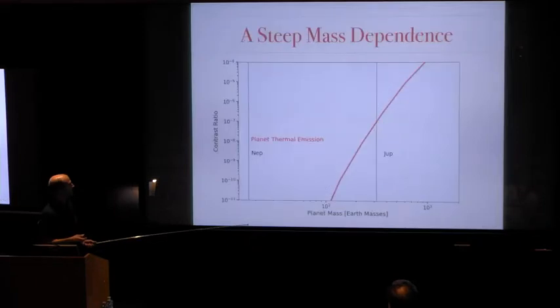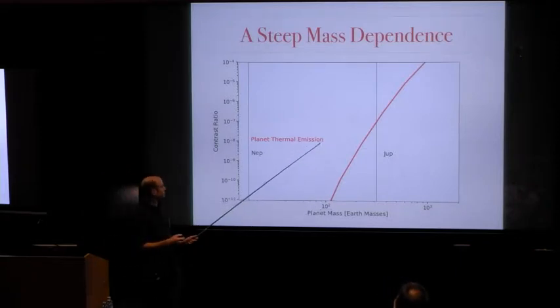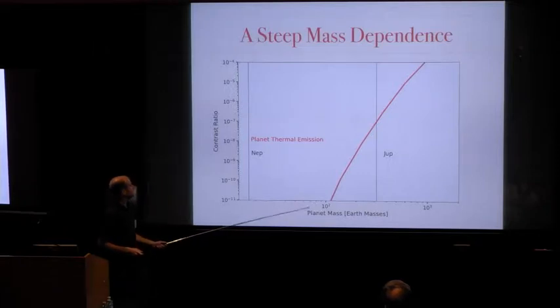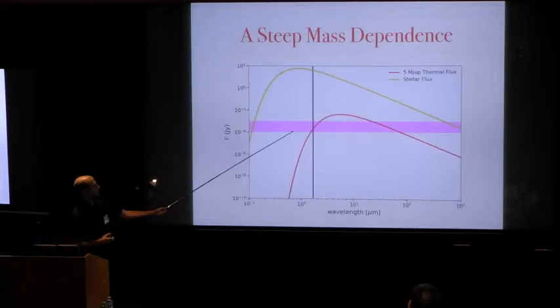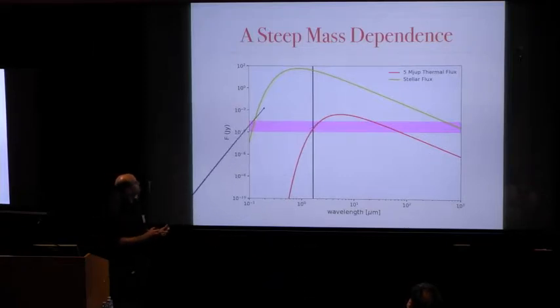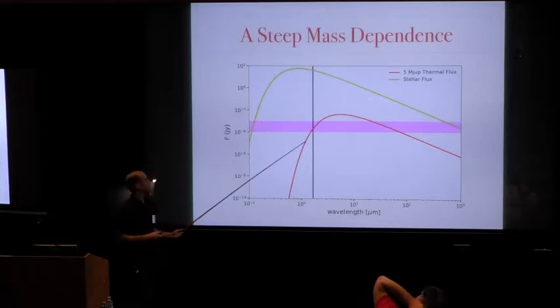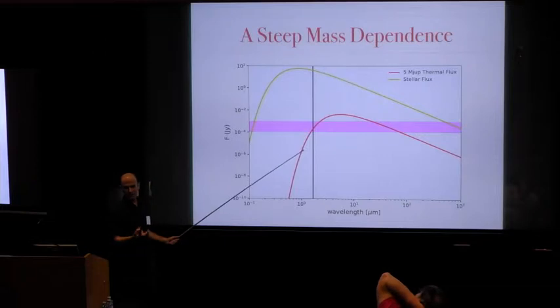But that's actually not the case. If you look at how these contrast ratios are going to depend on planetary mass, it's really, really, really steep. As you go from a three Jupiter mass planet to a Saturn mass planet, the contrast drops by something like a factor of 10 to the five. The reason for that is simple to understand. Here's our five Jupiter mass planet at 30 million years. GPI is observing here at 1.6 microns in the H band. You're on the wrong side of this blackbody curve, on the side that drops exponentially.